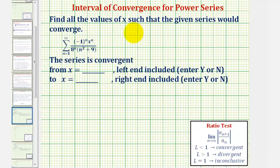We want to find all the values of x so that the given series would converge, which is called the interval of convergence for the power series. To do this, we'll apply the ratio test, where we know this limit must be less than one for the series to converge.